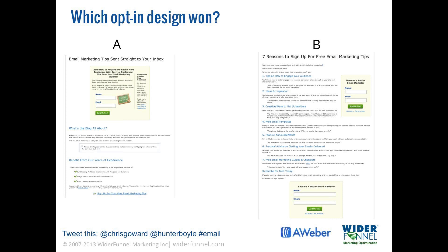I want to open a quick poll: looking at these two versions side by side, which one do you think performed best in terms of driving sign-ups? Was it our control — the short copy version — or did the long copy version pull ahead? Version A or version B?